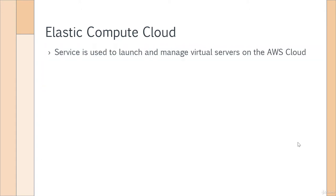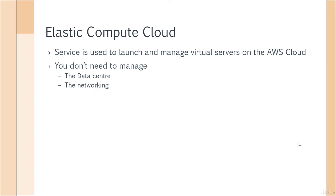So what is the Elastic Compute Cloud service? In AWS, this is a service that is used to launch and manage virtual servers on the internet. Here, you don't need to manage a lot of aspects. You don't need to manage that entire data center — the networking, the cooling, the physical hardware, the physical security — all of this is done by Amazon Web Services. They take extra special security and care to maintain those physical servers. All you need to do is create virtual servers in their data centers.